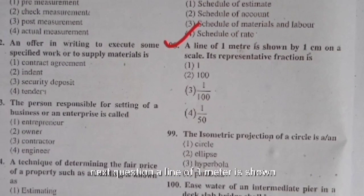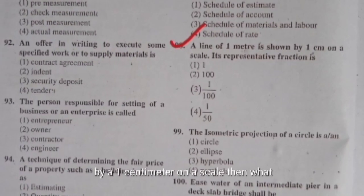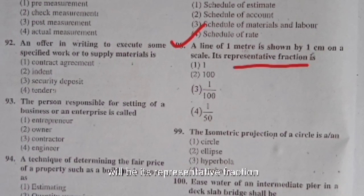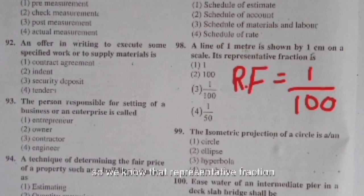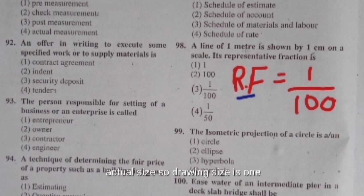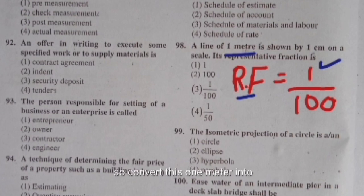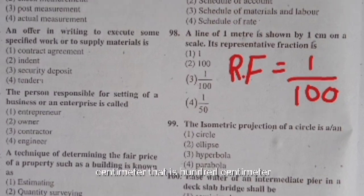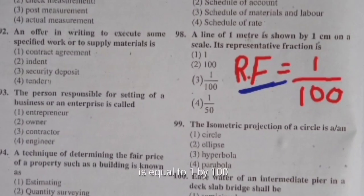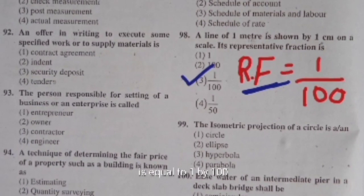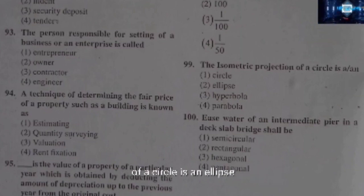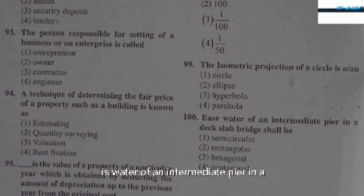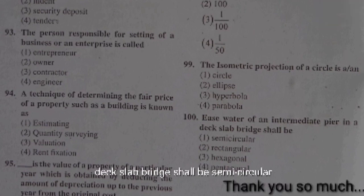If a line of one metre is shown by one centimetre on a scale, the representative fraction (RF) = drawing size / actual size = 1 cm / 100 cm = 1/100. The isometric projection of a circle is an ellipse. Each web of an intermediate pier in a deck slab bridge shall be semicircular.